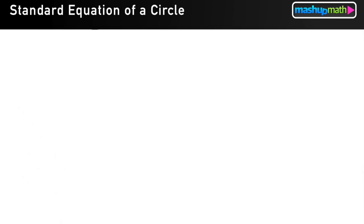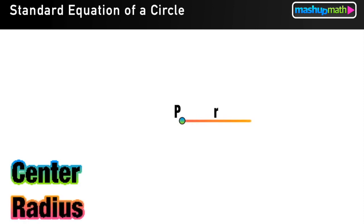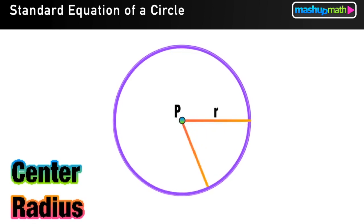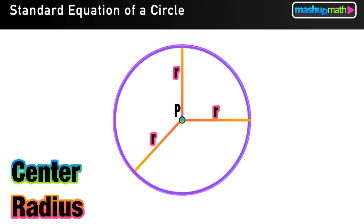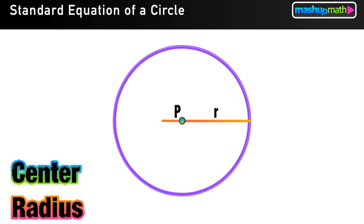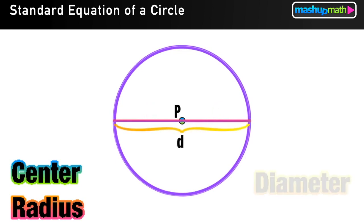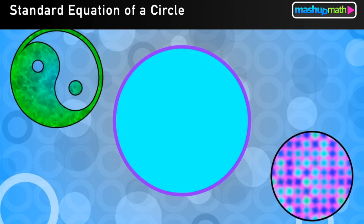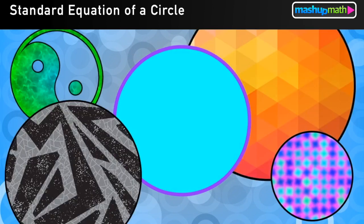Welcome to this lesson on the equation of a circle. Every circle has two basic components: a center point and a radius of some determined length. Swinging that radius around the center 360 degrees creates the circle, and if I know the length of one radius I know the length of all of them. Extending the radius through the center to the other edge gives the diameter, whose length is twice the radius. These basic properties apply to all circles of all sizes.